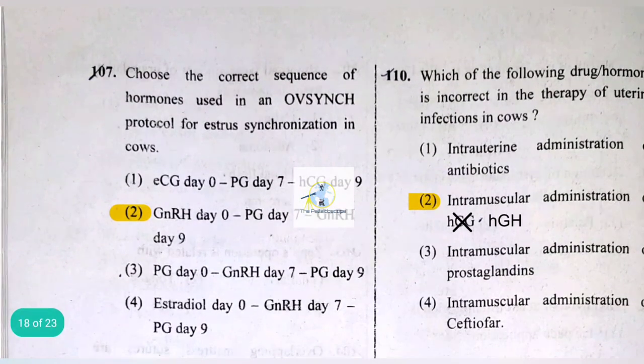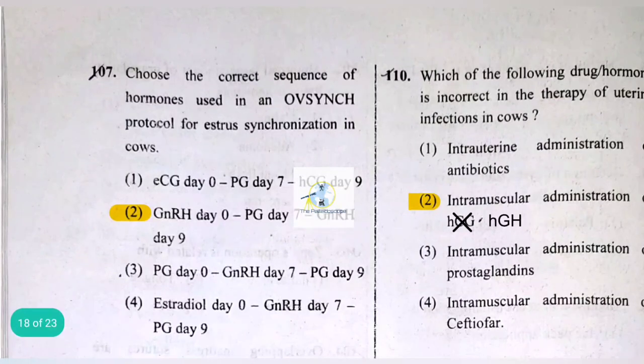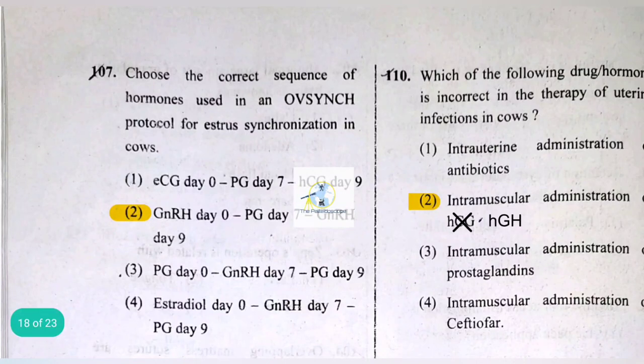Among the options for therapy of uterine infections in cows, the incorrect one is intramuscular administration of hGH.